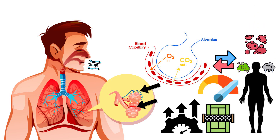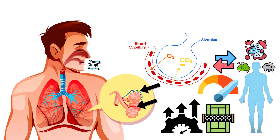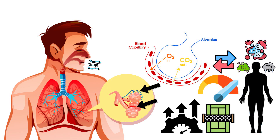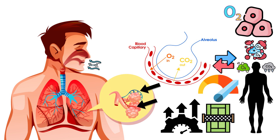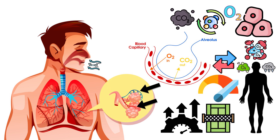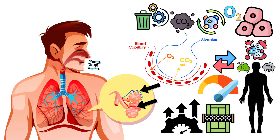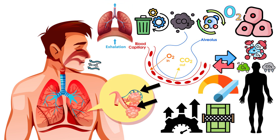Hemoglobin in the red blood cells binds to oxygen molecules, facilitating their transport throughout the body. Each cell utilizes oxygen for metabolic processes, producing carbon dioxide as a waste product, which is then transported back to the lungs for exhalation.